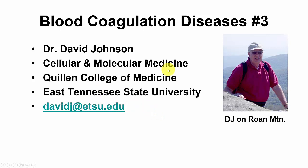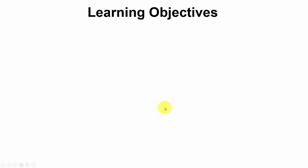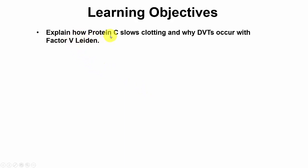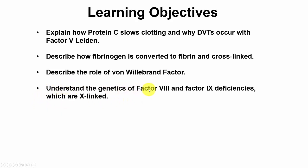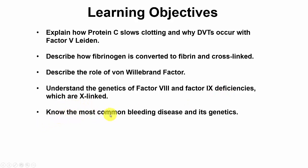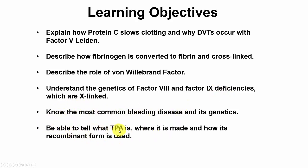This is the third video on blood coagulation, focusing on diseases. Learning objectives: explain how protein C slows clotting and why DVTs occur with Factor 5 Leiden; describe how fibrinogen is converted to fibrin and cross-linked; describe the role of von Willebrand factor; understand the genetics of Factor 8 and Factor 9 deficiencies, which are X-linked; know the most common bleeding disease and its genetics; and explain what TPA (tissue plasminogen activator) is, where it is made, and how its recombinant form is used.